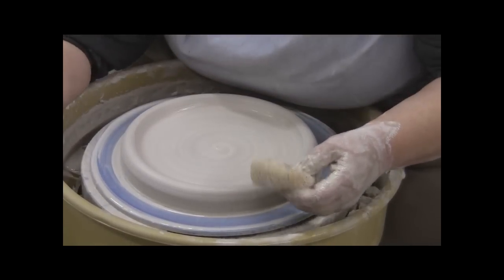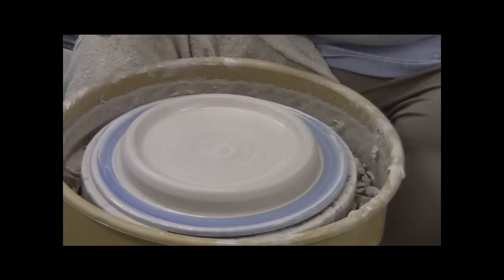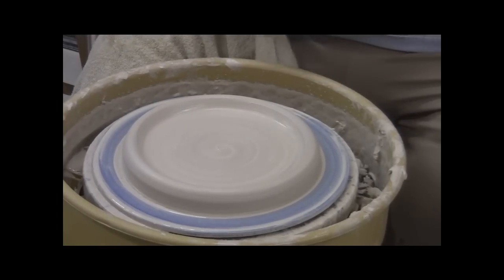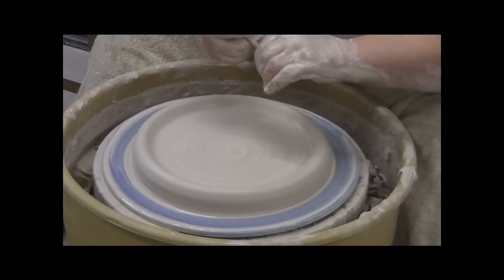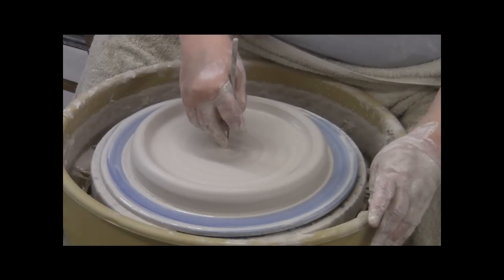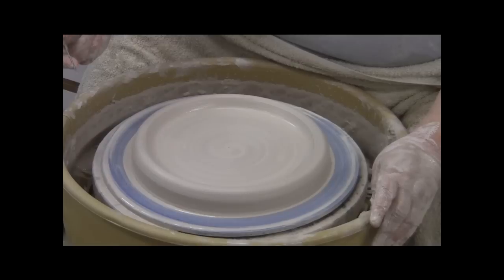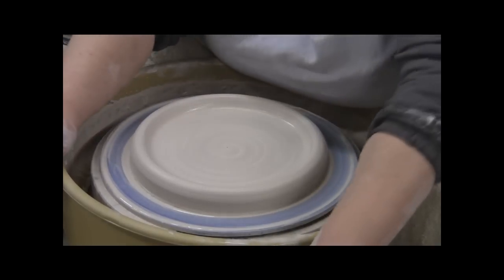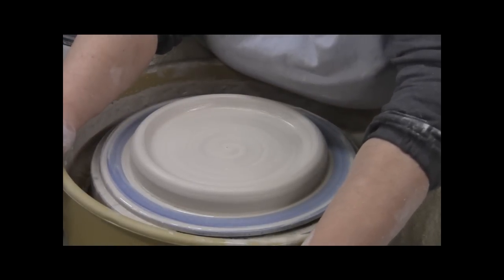Now I will measure again. I like to throw plates a little bit on the thick side and then trim them. This is too thick. We're opening some more. This is almost half an inch, and I want it about a quarter inch less than that. That would be just too much trimming.